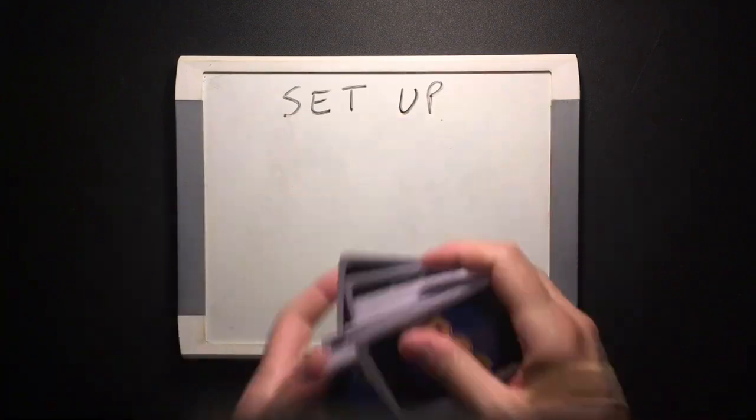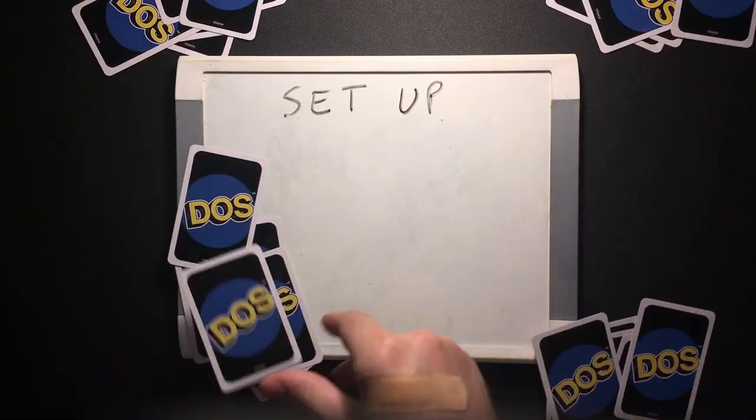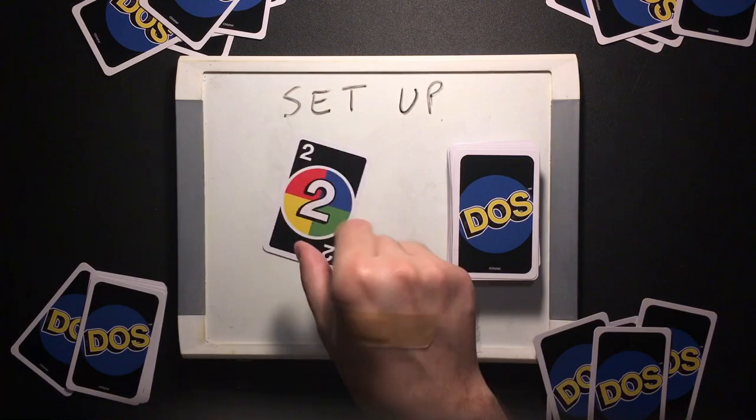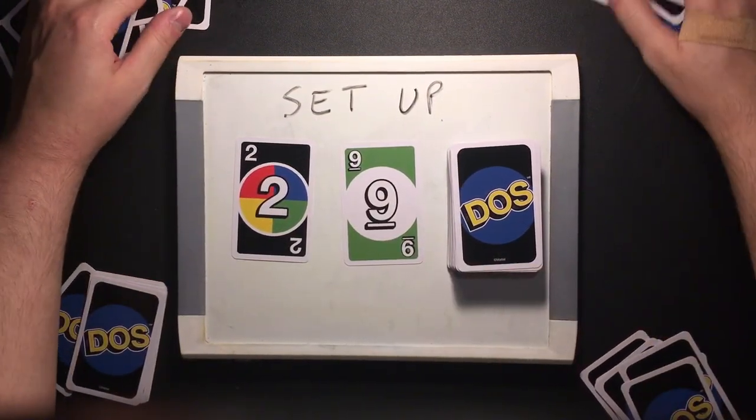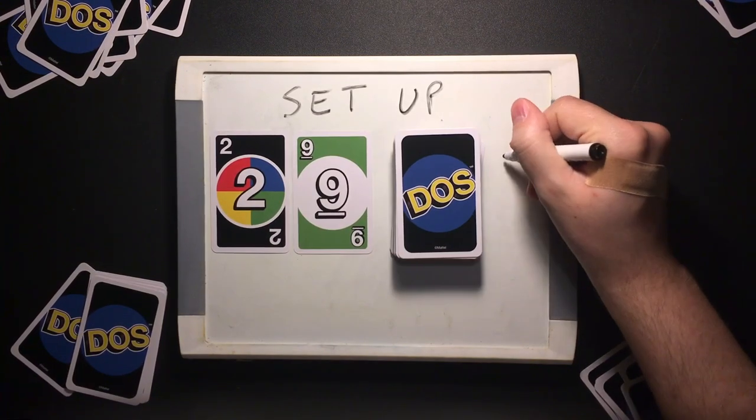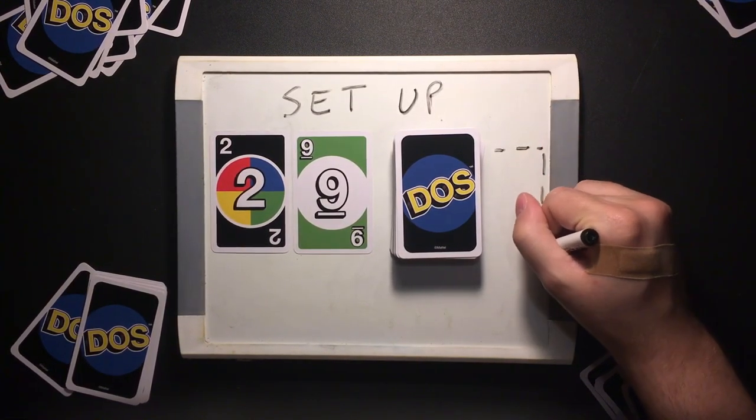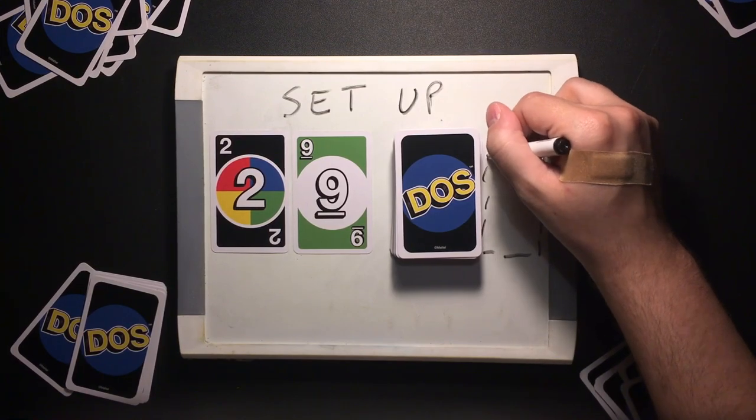The dealer shuffles the draw pile and deals each player seven cards. They then place the top two cards of the draw pile face up, side-by-side in the center of the play area to form the center row. Finally, they place the draw pile within reach of all players, with enough space for a discard pile next to it.